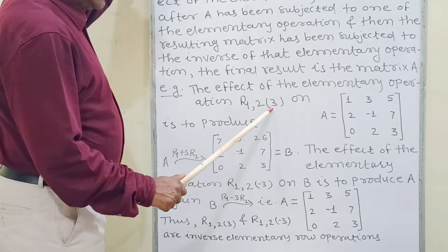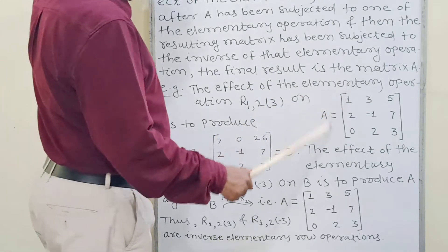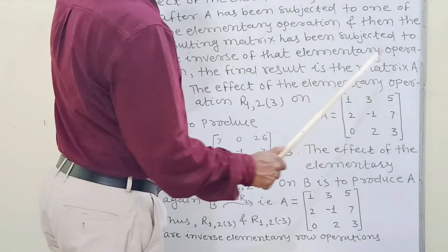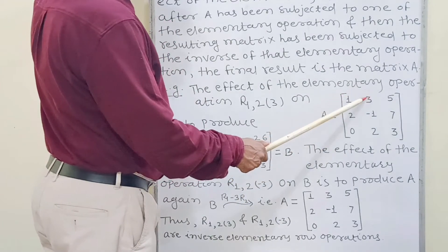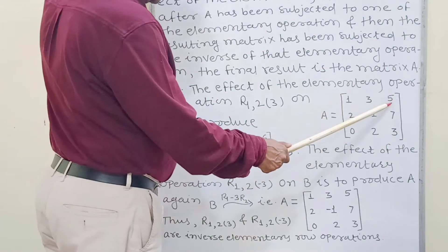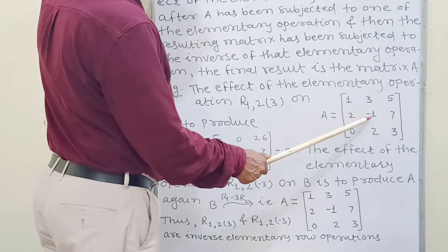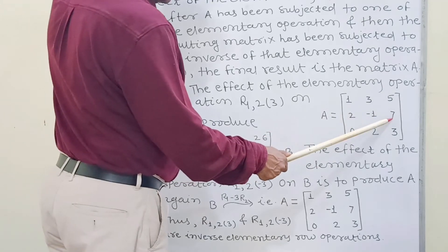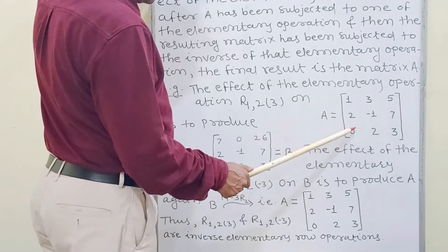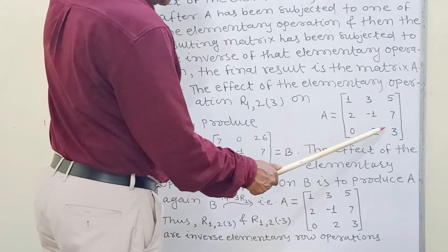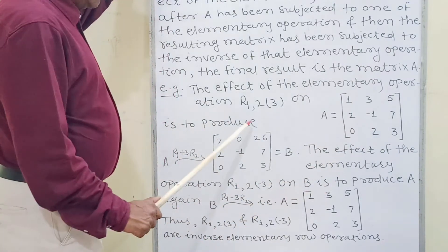Matrix A is equal to [1, 3, 5; 2, -1, 7; 0, 2, 3], to produce...